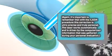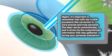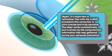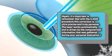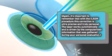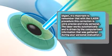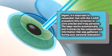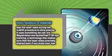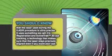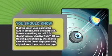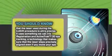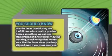Again, it's important to remember that with the iLASIK procedure, this correction is ultra precise and truly personal. The laser works automatically and is driven by the computerized information that was gathered during your personal evaluation. The laser used during the iLASIK procedure is ultra precise. It uses something we call iris registration, a technology that makes sure the laser stays precisely aligned even if you move your eye.